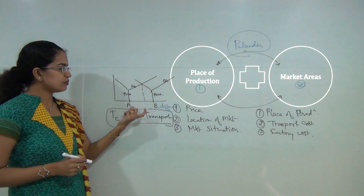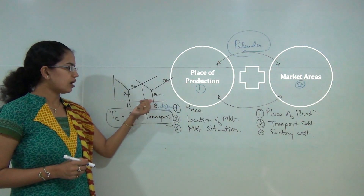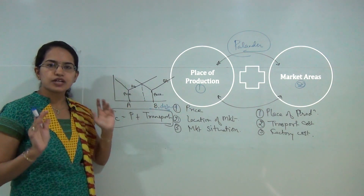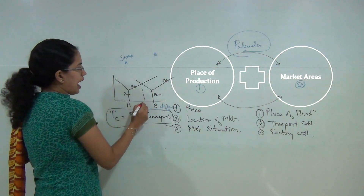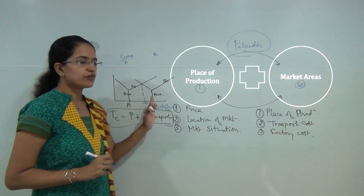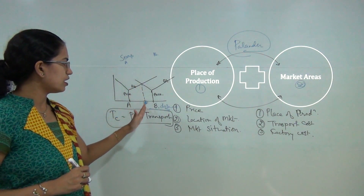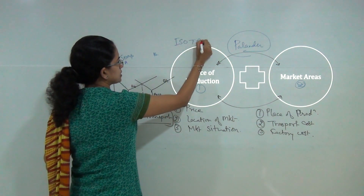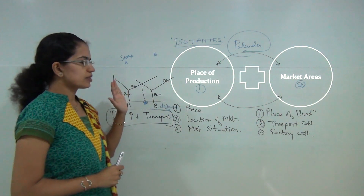The place where the total cost lines of location A and location B intersect would be the best location for the industry to be established. At this intersection point the consumer is willing to pay the same price for the product whether picked up from industry A or industry B — for example, a soap industry at point A and point B where the consumer pays equal price for either soap. This would be the point of optimum location. The market boundaries formed under Plander's theory are called isotends.